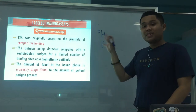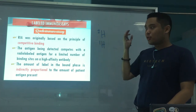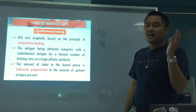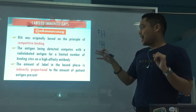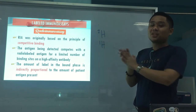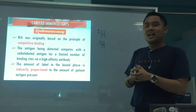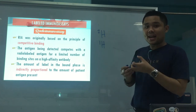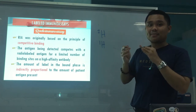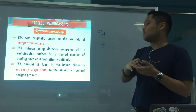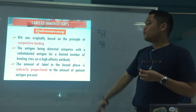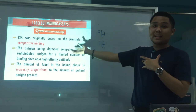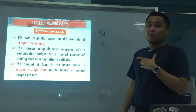The principle of RIA, or radio immunoassay, is originally based on competitive binding. So the antigen being detected competes with your radio-labeled antigen for a limited number of binding sites on your high-affinity antibody. Because it's competitive, therefore the result is indirectly proportional.